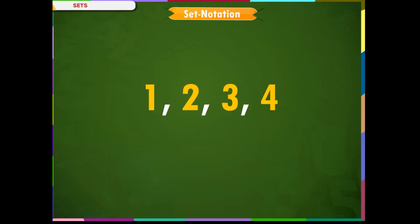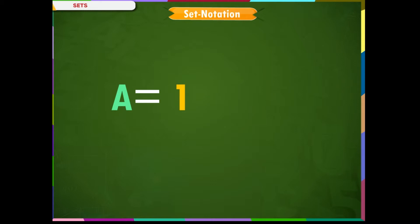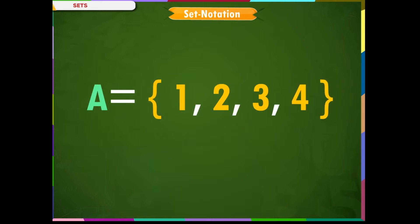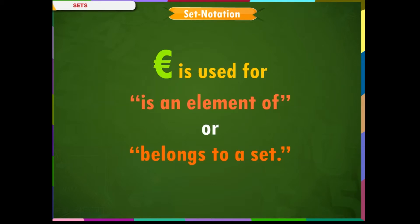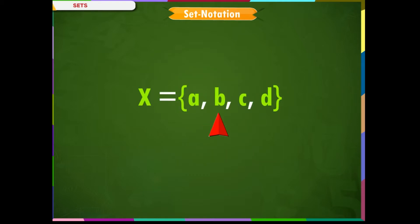Set A will be represented as A = {1, 2, 3, 4} within curly brackets. The symbol shown on the screen is used for 'is not an element of' or 'does not belong to'. Consider a set X = {A, B, C, D} within curly brackets. We can say that B is an element of X, as shown on the screen. We can also say that I is not an element of X, as shown on the screen.